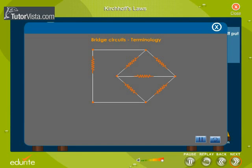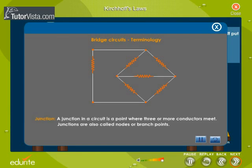Bridge Circuits Terminology. Junction: A junction in a circuit is a point where three or more conductors meet. Junctions are also called nodes or branch points. Loop: A loop is any closed conducting path.